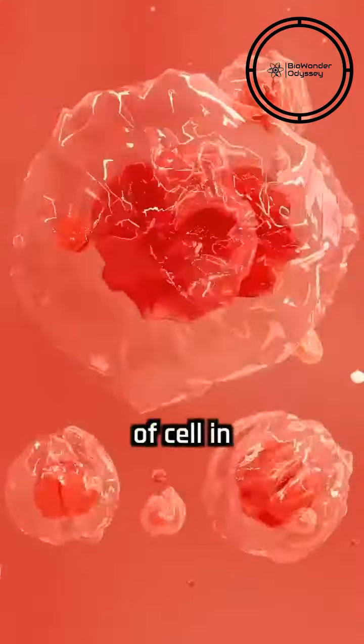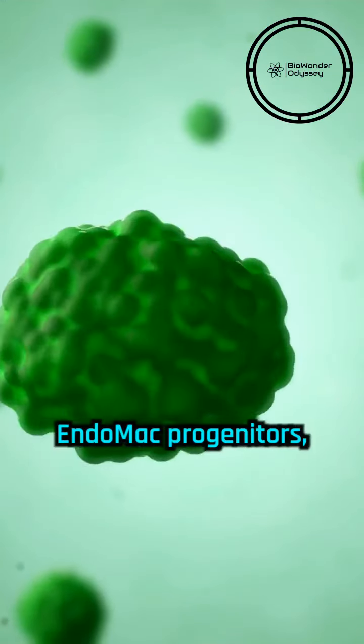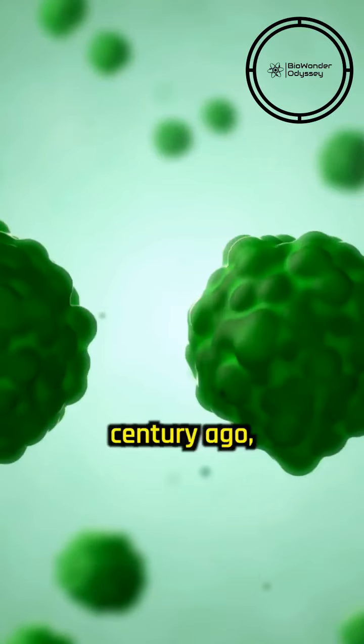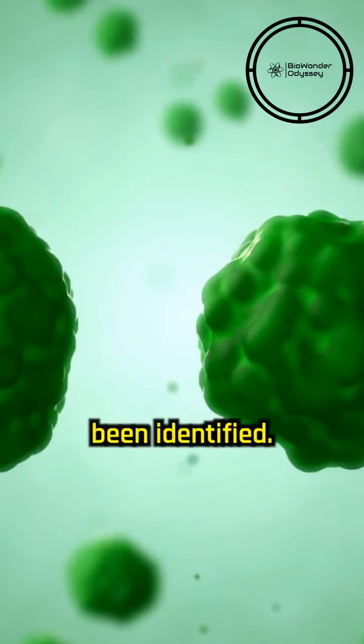Scientists have discovered a new type of cell in mice, named endomac progenitors. These cells were predicted over a century ago but have only now been identified.